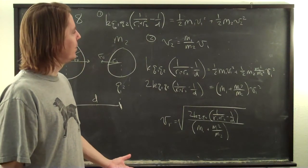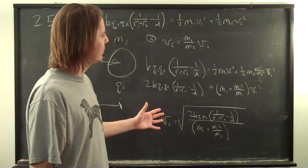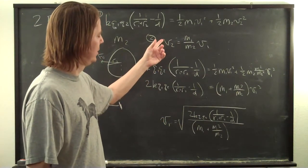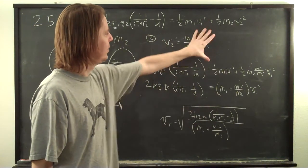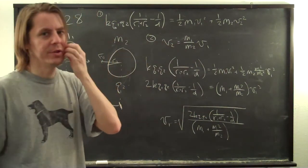I'm not going to do it, but you could solve for v2. Now that you have this, you could solve for v2 very easily, just plug this here. Just multiply this by m1 over m2, and you have v2.